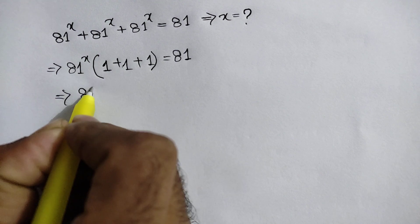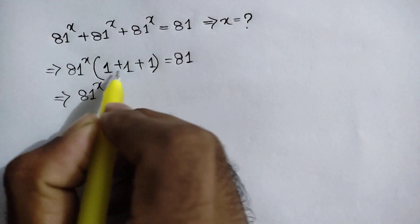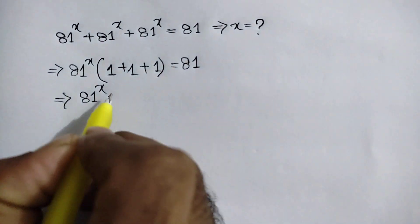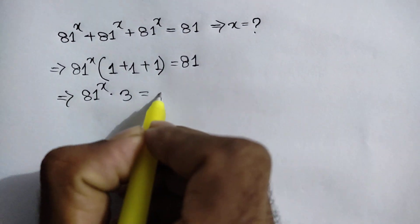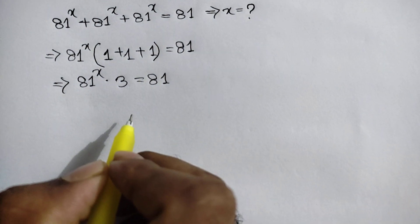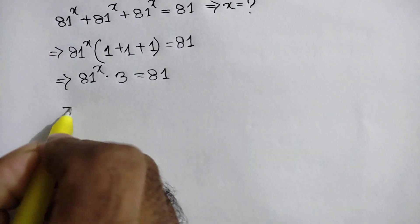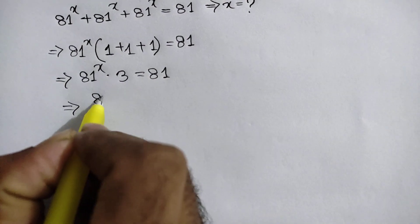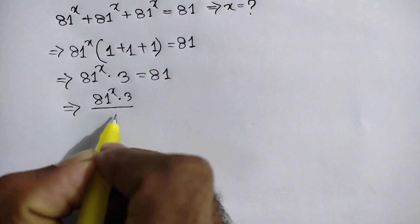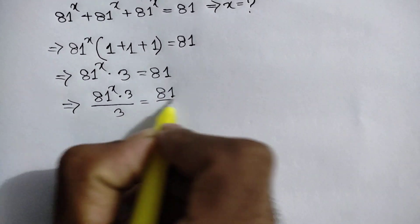Next, 81 to the power x times 3 equals 81. Now we can divide both sides by 3, so we write 81 to the power x times 3 over 3 is equal to 81 over 3.